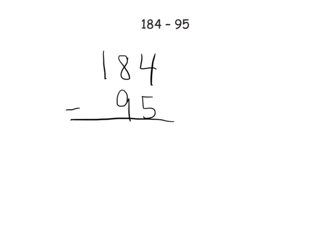Let's use logic. In the ones column we have four, and we need to take away five. Do we have enough ones? No. So we're going to unbundle one of those tens, leaving us with seven tens. When we unbundle, we get ten ones, meaning instead of four ones we now have fourteen ones. Fourteen minus five — what's that? That's nine.